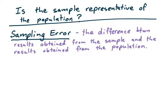The first thing to discuss is what we call a sampling error. This is defined as the difference between results obtained from the sample and the results obtained from the population itself.